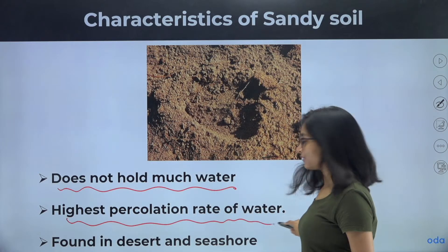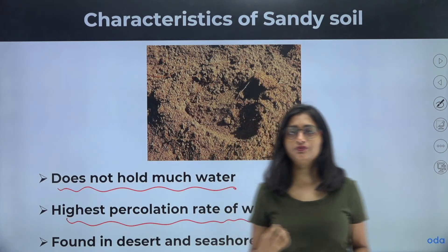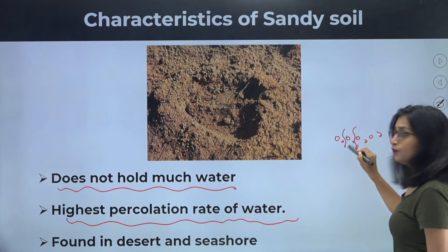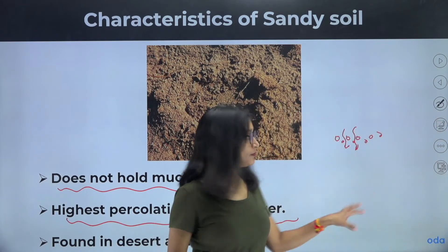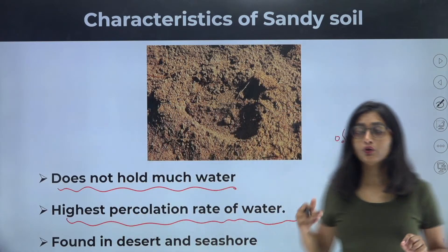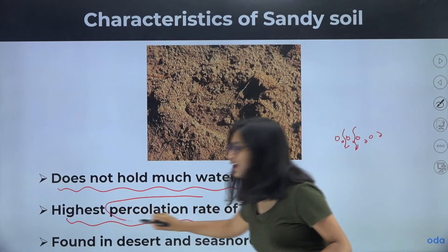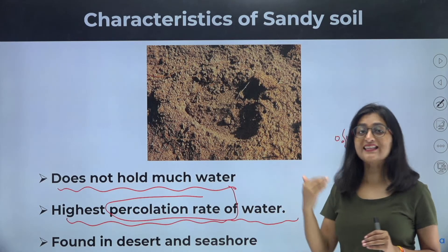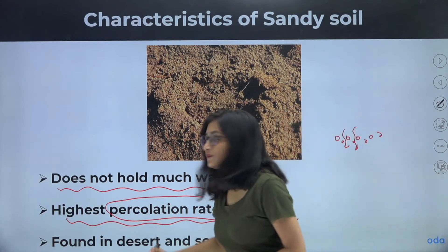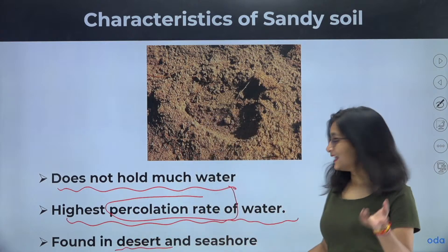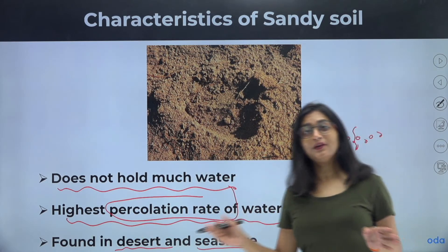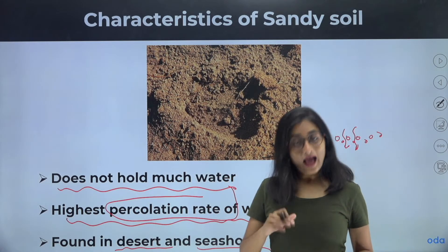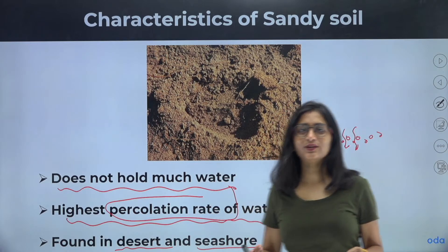Sandy soil has the highest percolation rate of water. If you put sand and pour water onto it, you will find that the majority of the water penetrates down. The percolation rate is highest in the case of sandy soil — it allows the passage of water in a greater amount compared to other kinds of soil. Sandy soil is found in deserts and on the seashore. If you go to beaches, you get sandy soil, and in deserts, you get sand — that's the sandy soil.